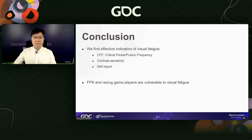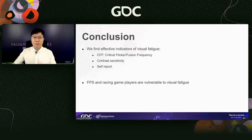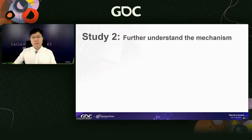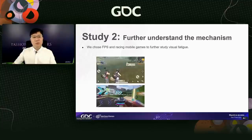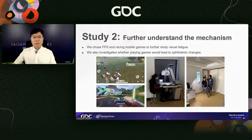Once we identify a risk factor, we can try to eliminate its impact — for example, reducing the number of such rooms or adjusting brightness and transitions between dark and bright areas. In study two, we wanted to further understand the underlying mechanism and shed light on how to relieve tiredness. We chose FPS and racing mobile games to further study visual fatigue, and brought in optometric measurements.